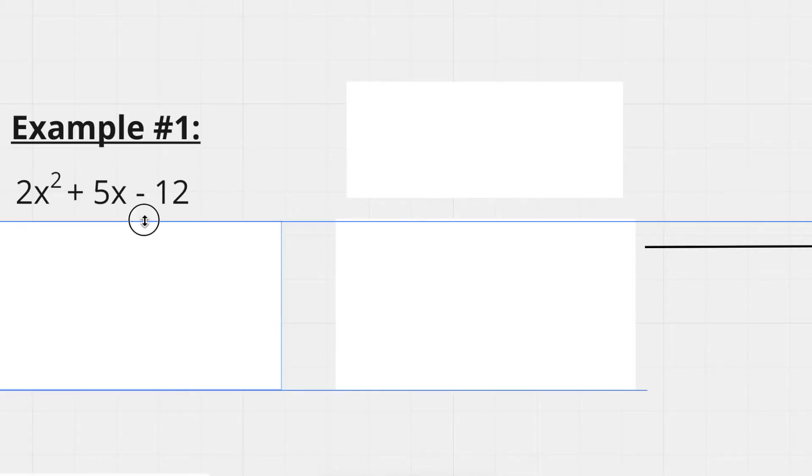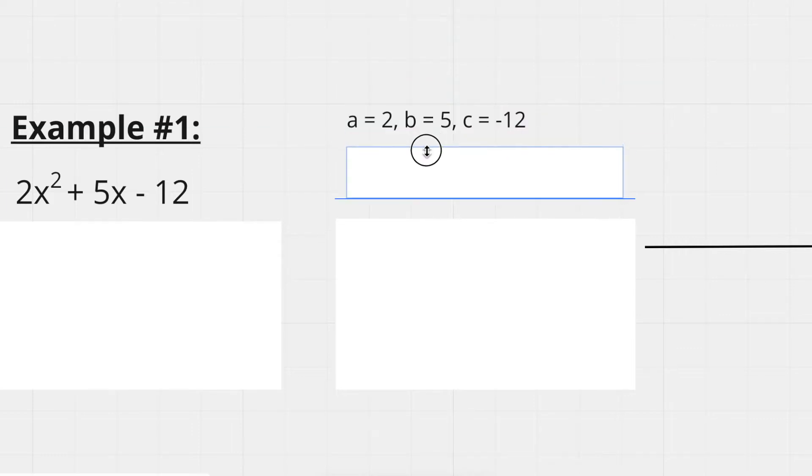So this first example is 2x squared plus 5x minus 12, and we need to factor this. So the first step is to write down each of our values. So we have our a value is 2 in 2x squared, the b value is 5, as in plus 5x, and c is negative 12, as seen in the end of the expression.